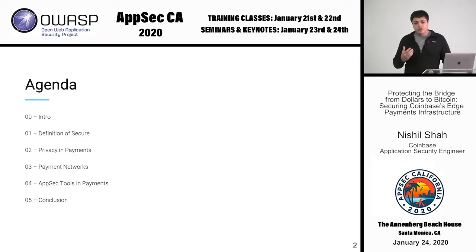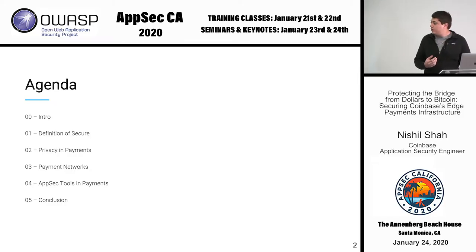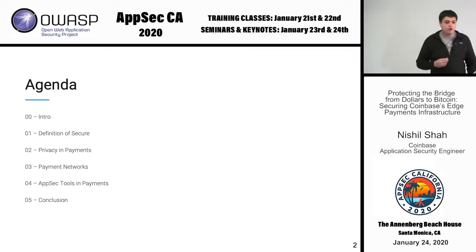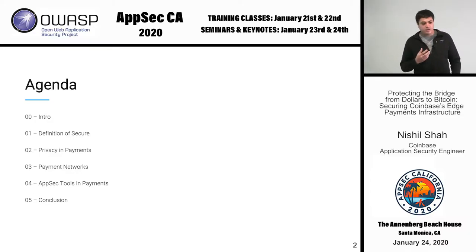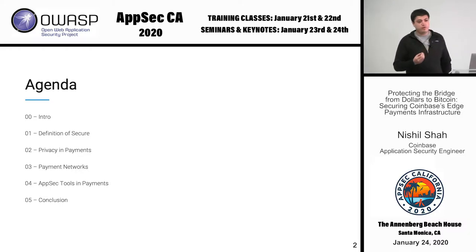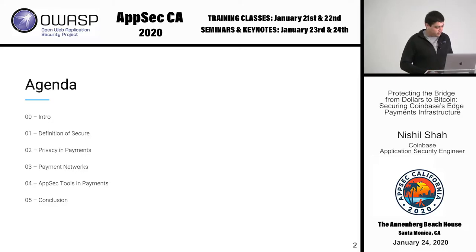Today I'll quickly introduce myself and what I work on at Coinbase, what Coinbase is, how we define security in payments networks, privacy in payments and the trade-offs we make in the current financial systems, payment networks as a whole, how we threat model them, how we think about these in a security context, how we apply common AppSec tools into the payments world — things like security champions or bug bounty programs — and we'll have a conclusion with some final remarks.